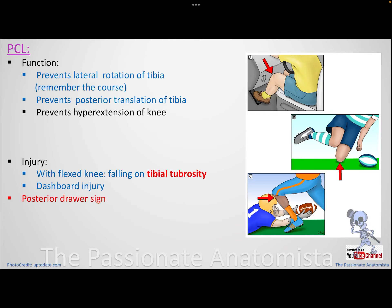The PCL — remember it was throwing the ball from the back side, upward, forward, and medially, going to the medial femoral condyle. It prevents lateral rotation of the tibia. It also prevents posterior translation because it comes out of the posterior intercondylar area of the tibia, holding the tibia from going backward.